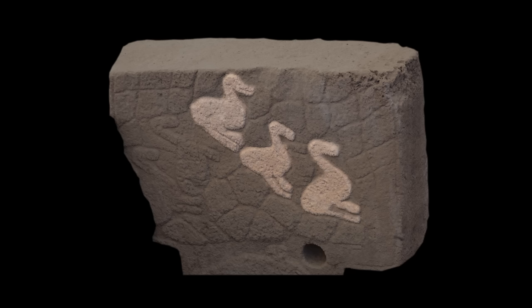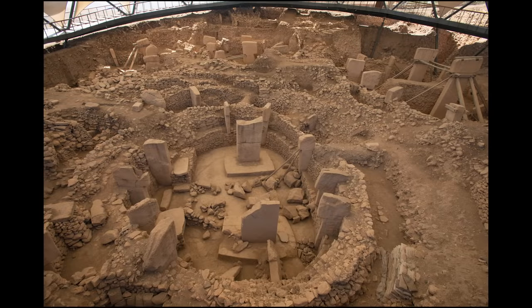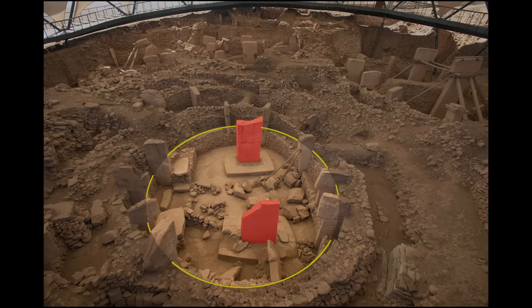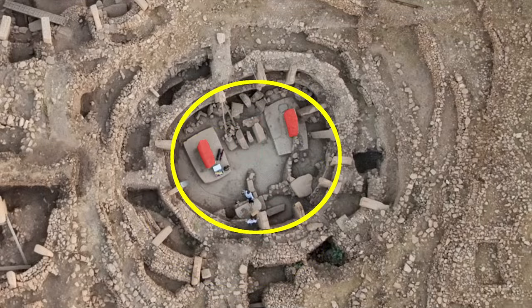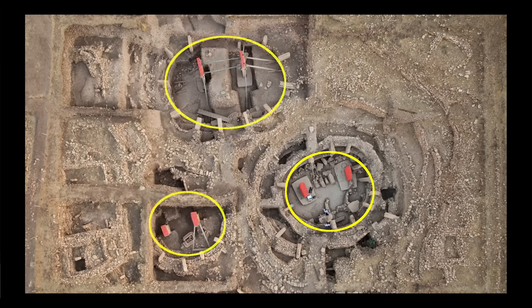To see the degree of precision, look at the circular room I showed you initially. At the center are the remains of two T-pillars. The tops fell off long ago. If we look at this room from above—keep your eye on the two central pillars highlighted in red—you see two circular rooms nearby.